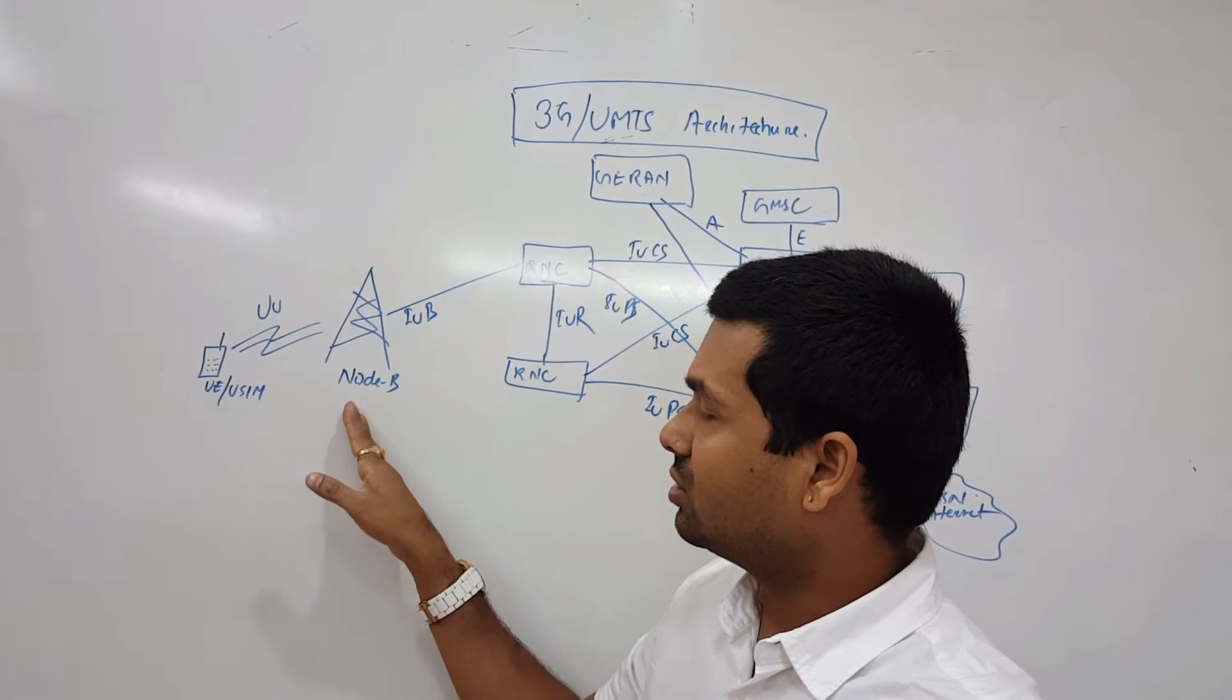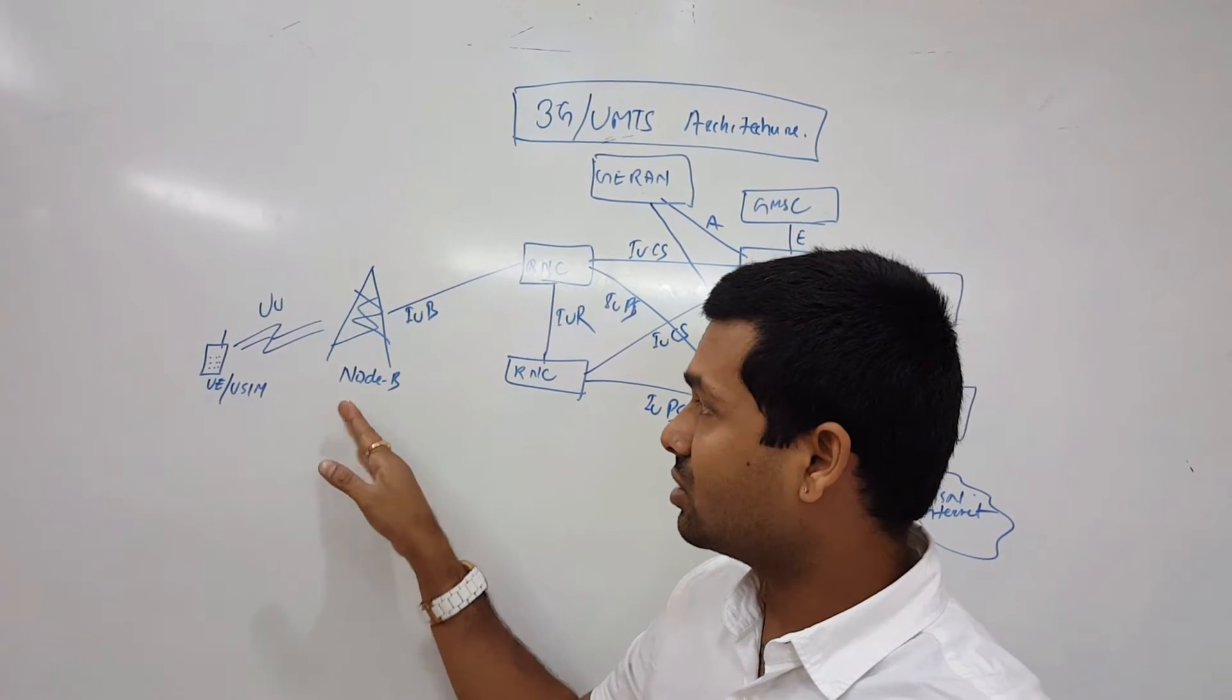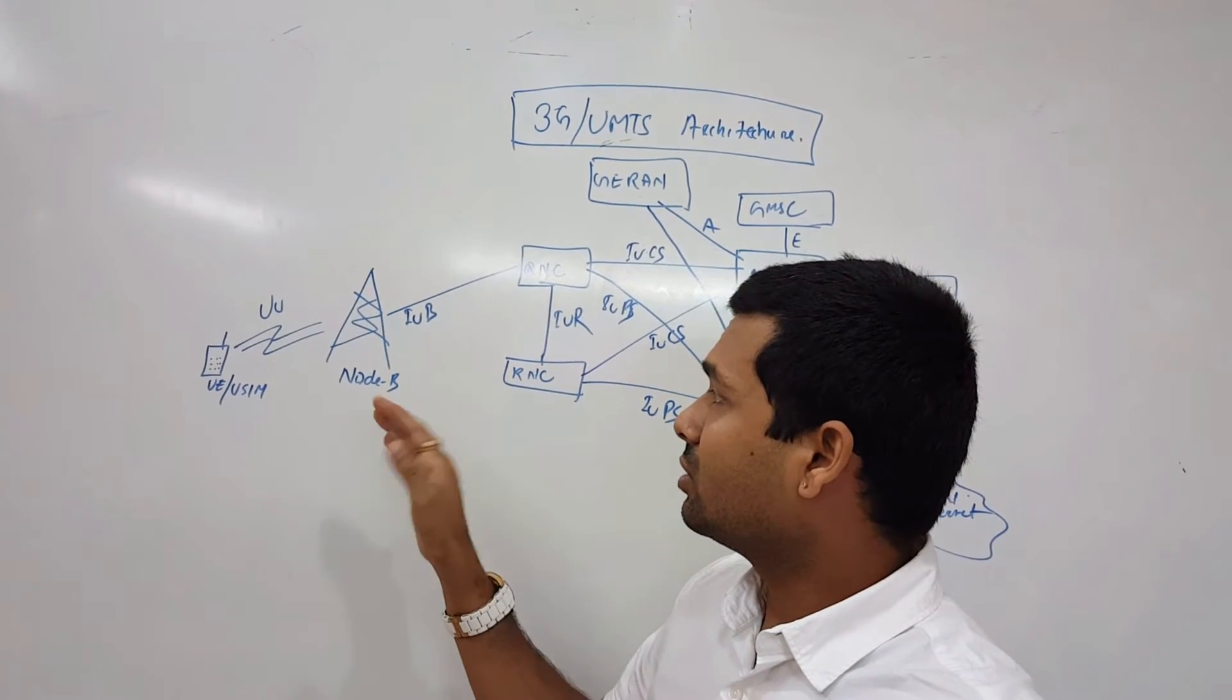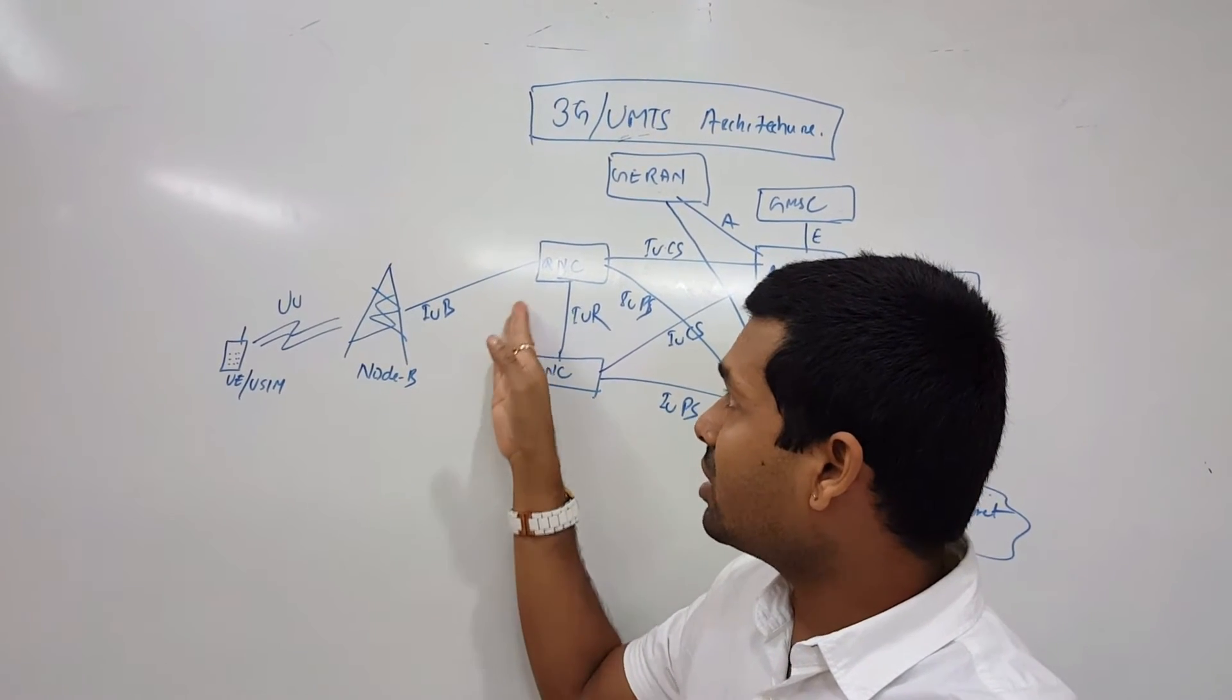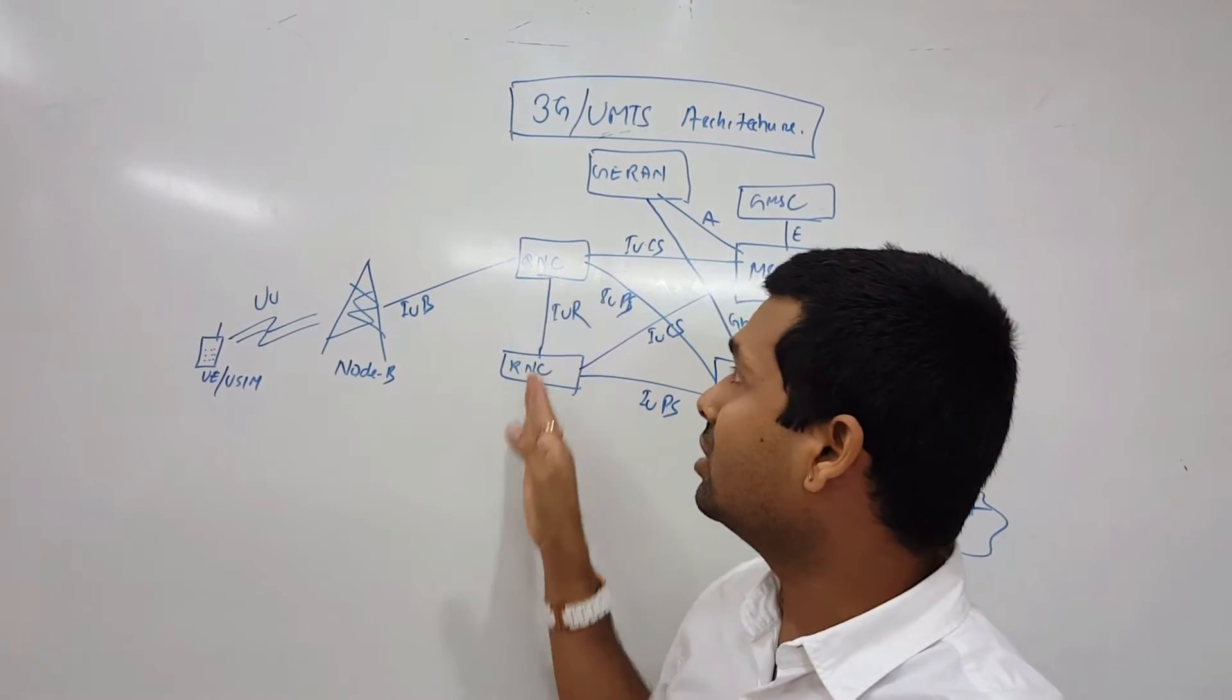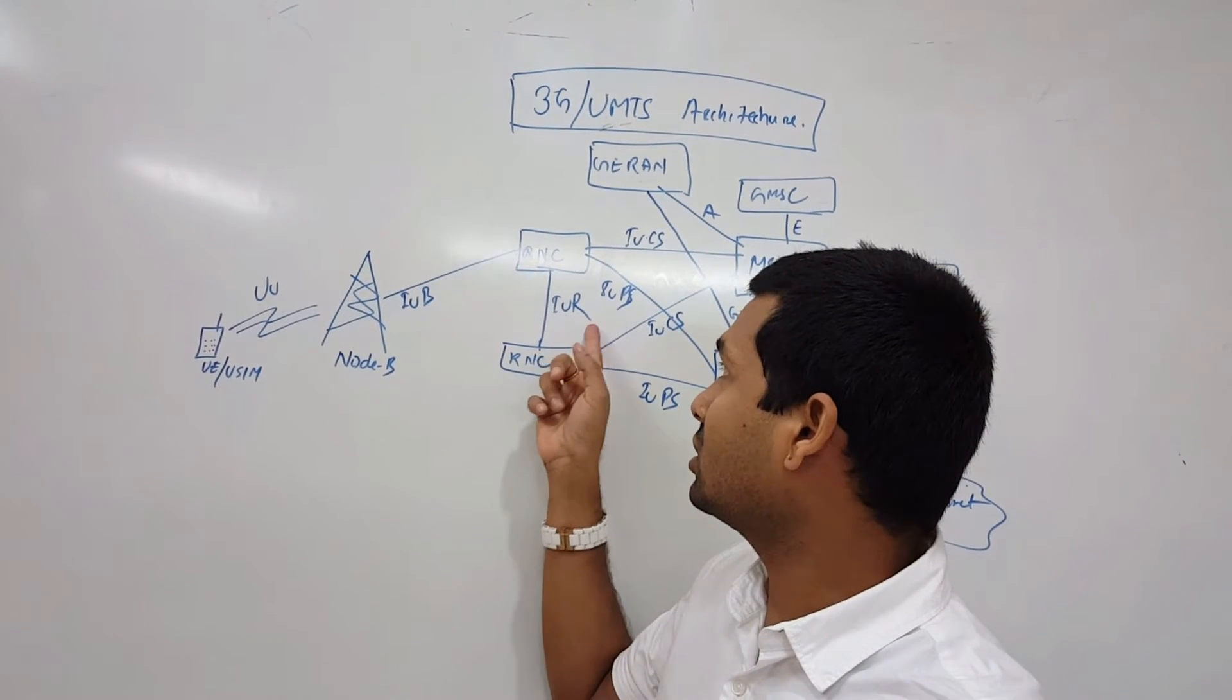UE and the E-NodeB, the interface is UU interface. E-NodeB is the first node. From E-NodeB to RNC we have IUP interface. From RNC to RNC, inter-RNC, we are having IUR. So this is optional if you want, we can opt this.